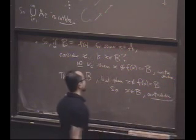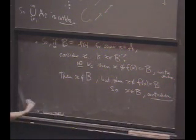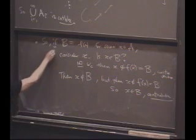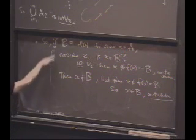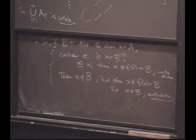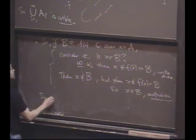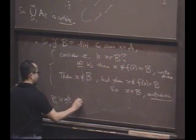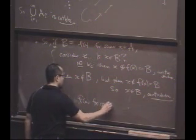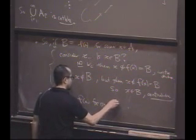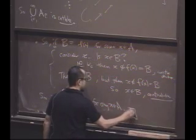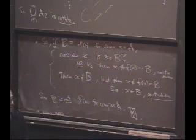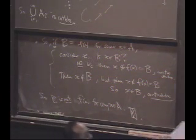Either way, we get a contradiction. So what's the only alternative now? If either way we get a contradiction, that must be false, the fact that B is in the image of F. So B is not in the image of F, equal f of x for any x in A. That's the end. Such a bijection could not have existed. That's the desired contradiction.